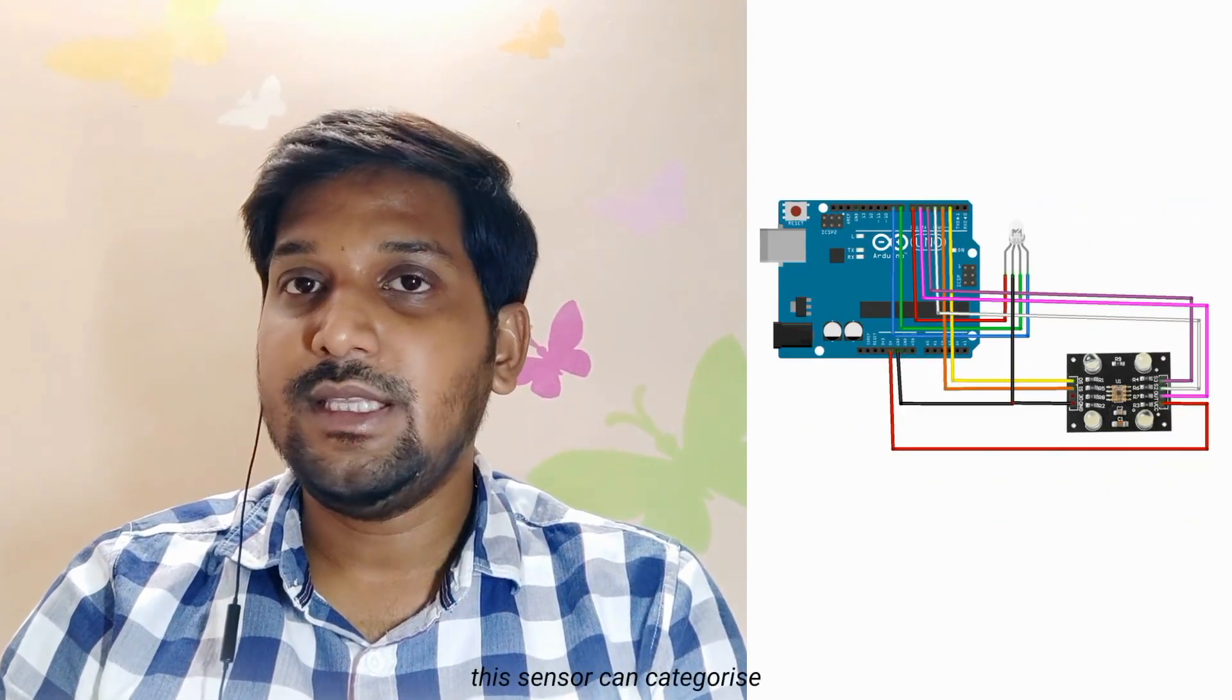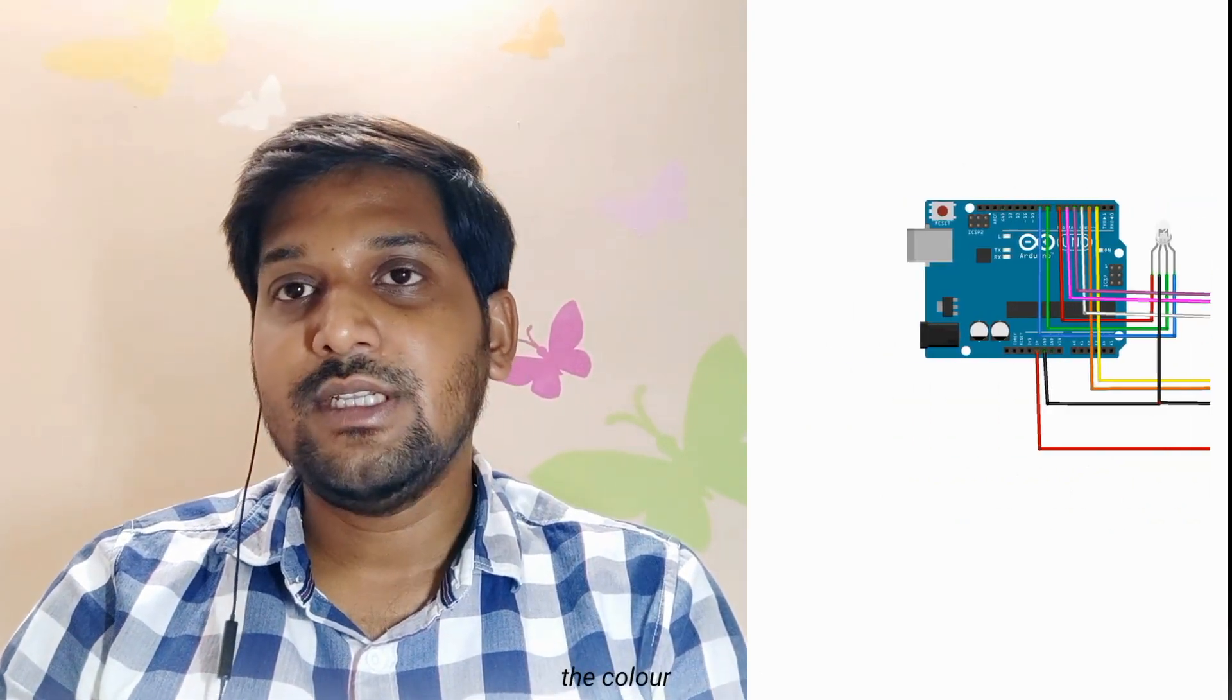Last on our list, color sensor. A color sensor detects the color of the material. This sensor mainly uses to detect color in RGB scale. This sensor can categorize the color as red, blue or green.